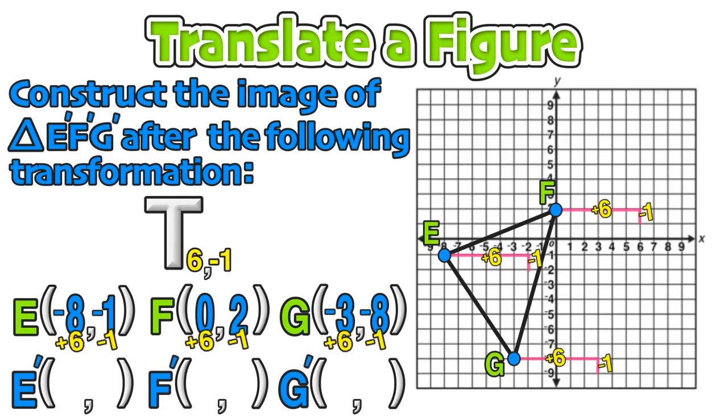Now to verify the coordinates of E prime, F prime, and G prime, we start by adding six to each x coordinate, and that'll give us the new x coordinate of E prime, F prime, and G prime. We'll do the same thing with the y coordinates by subtracting one from each to get those new y coordinates.